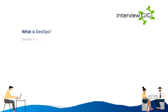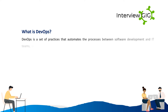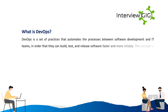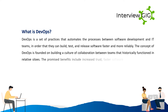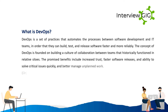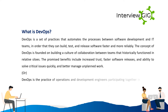DevOps is a set of practices that automates the processes between software development and IT teams, so that they can build, test, and release software faster and more reliably. The concept of DevOps is founded on building a culture of collaboration between teams that historically functioned in relative silos. The promised benefits include increased trust, faster software releases, ability to solve critical issues quickly, and better manage unplanned work.